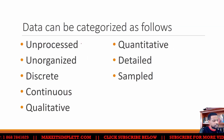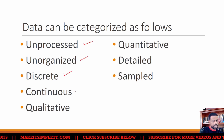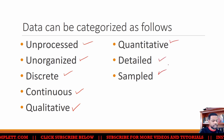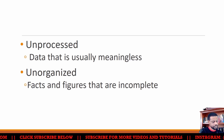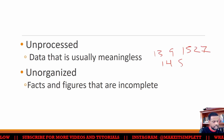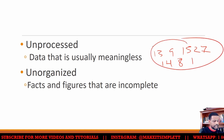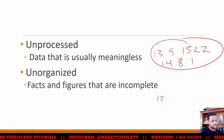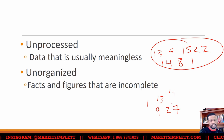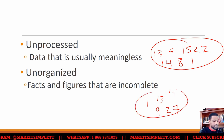In characterizing data, data could be unprocessed, unorganized, discrete, continuous, quantity, qualitative, quantitative, detail, or sample. Unprocessed data is data that is usually meaningless — just certain numbers like 13, 9, 15, 27, 14, 8, and 1. Unorganized data would be those numbers scattered around with no numerical or alphabetical order, which makes it unorganized.